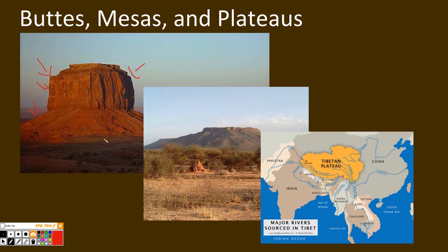Wind crashes into the rock, knocks the rock to the ground, and forms a pile around the butte. Mesas are formed the same way, only on a larger scale. And finally, plateaus are formed in the exact same way — wind weathering and erosion — but on a very large scale.